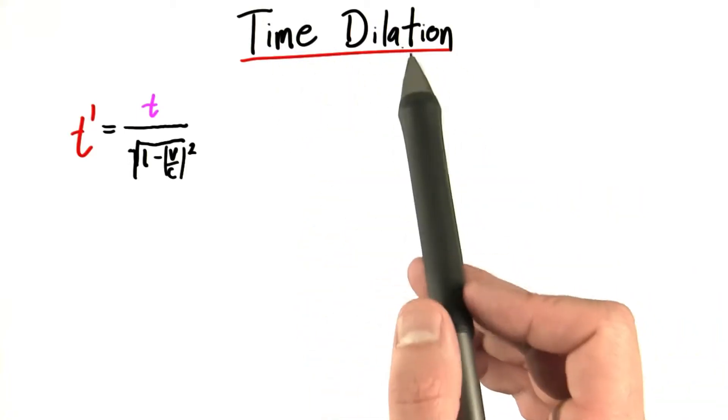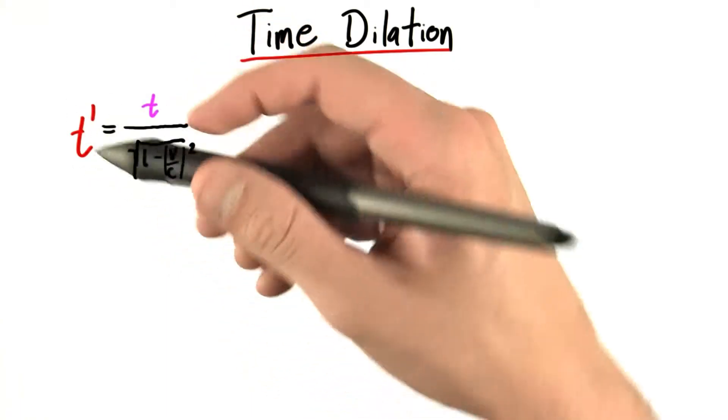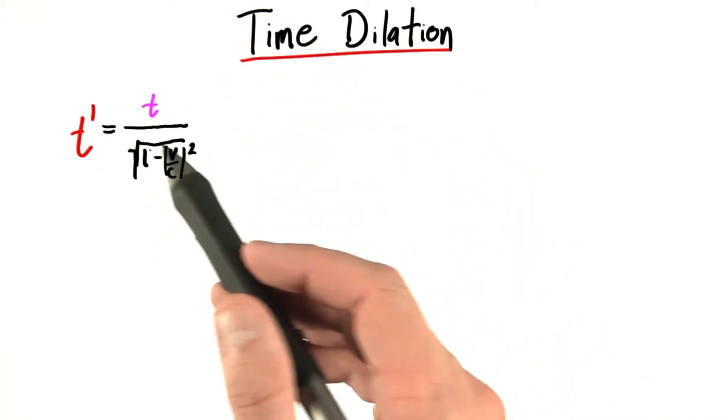So we have this effect that I haven't given a name to yet, but we're going to call time dilation, and you'll see why in a minute. And we have these equations relating the rates at which different clocks tick.